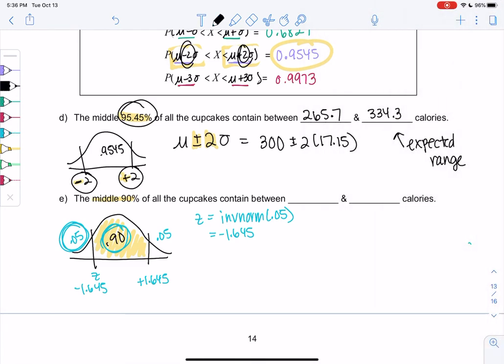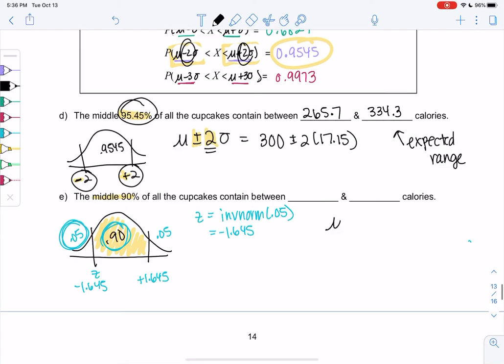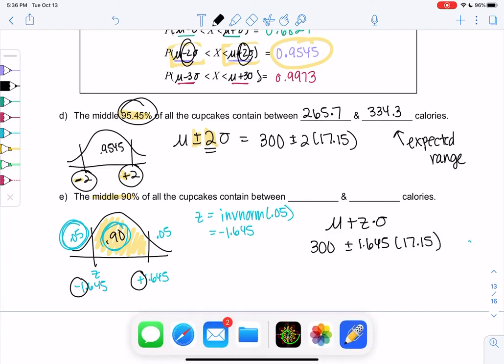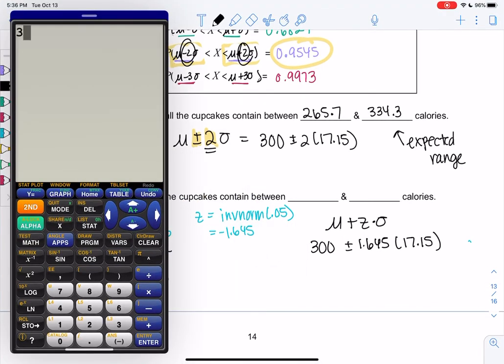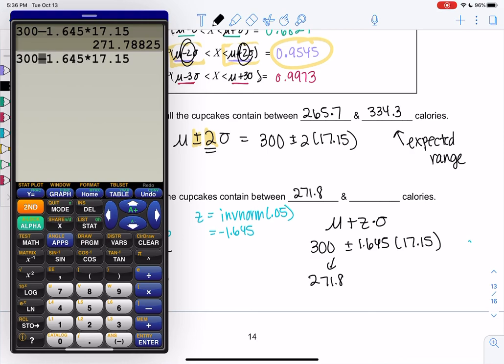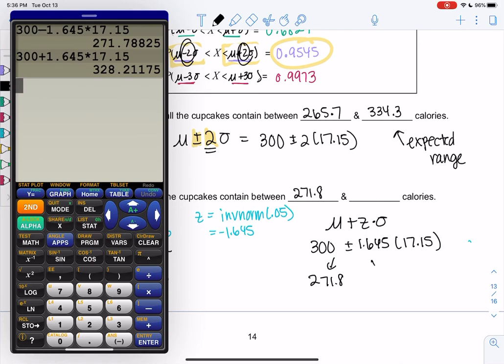We'll use that same de-standardizing formula. But now instead of 2, we use 1.645. So it's the mean plus z times sigma, 300 plus or minus 1.645 times 17.15. And we'll plug that in and then we'll be done. It's a long section, thanks for sticking through. So 300 minus 1.645 times 17.15 gives me 271.8, and up to 300 plus 1.645 times 17.15, we get 328.2. So the middle 90% of cupcakes will be between 271.8 and 328.2.